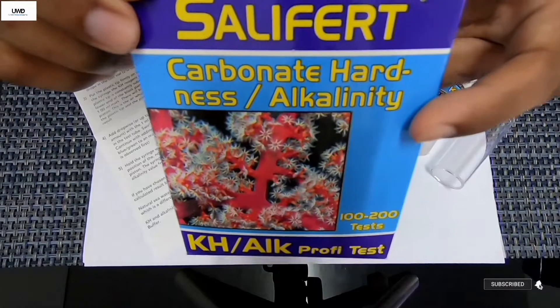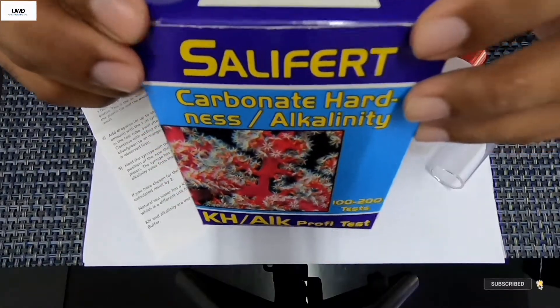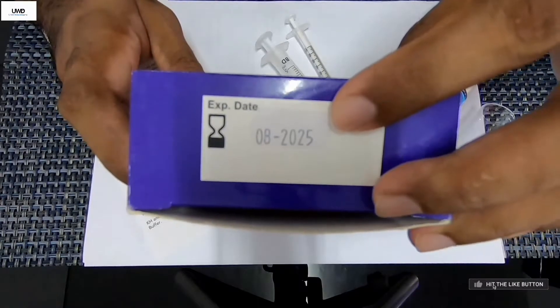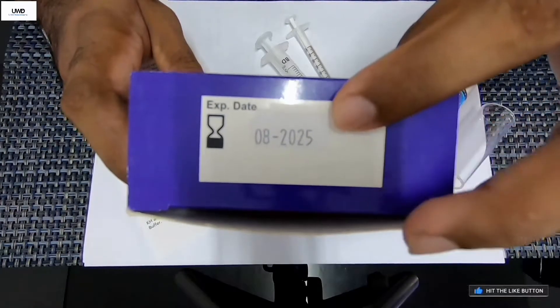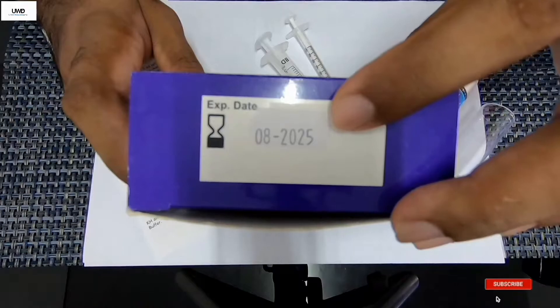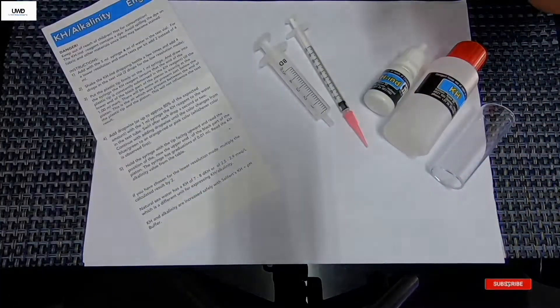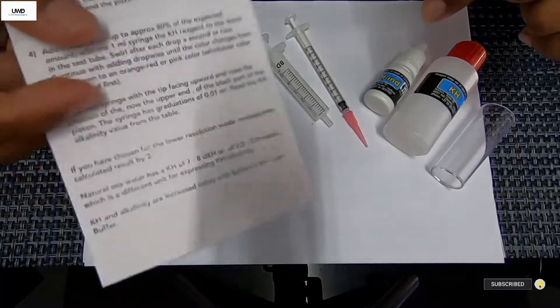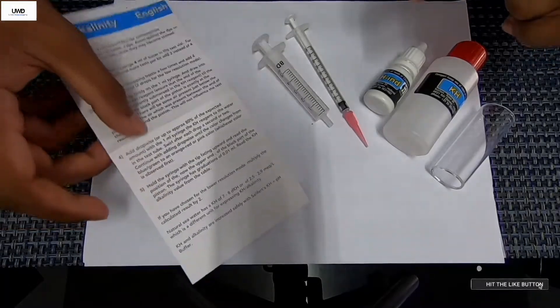The first thing you have to be aware of is the expiry date. Don't buy expired items, make sure it's the latest. We're going to be checking inside the box and there is also going to be a pamphlet or booklet on how to use this product.